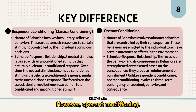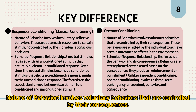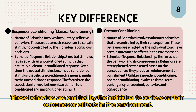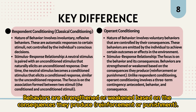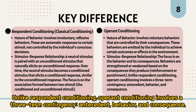In contrast, operant conditioning involves voluntary behaviors that are controlled by their consequences. These behaviors are emitted by the individual to achieve certain outcomes or effects in the environment. The focus is on the behavior and its consequences — behaviors are strengthened or weakened based on the consequences they produce (reinforcement or punishment). Unlike respondent conditioning, operant conditioning involves a three-term contingency: antecedent, behavior, and consequence.